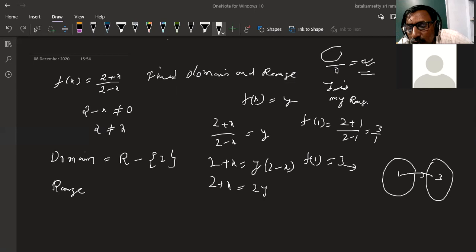Now I can take x common: x times (1 minus y) equals 2 minus 1. Take common factor (1 minus y) from both sides.